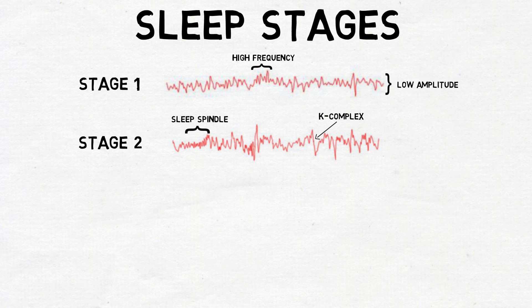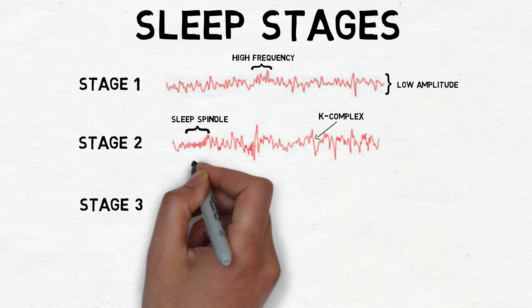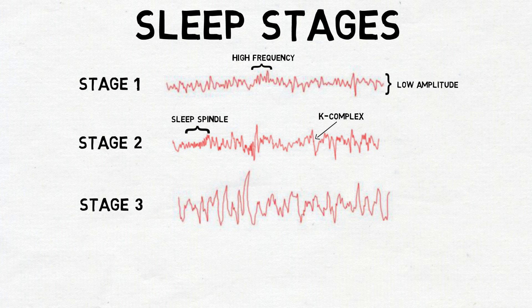Stage 3 sleep is also known as slow-wave sleep, or deep sleep. In stage 3, delta waves, which are low-frequency, high-amplitude waves, make up at least 20% of brain activity. Stage 3 sleep is thought to be especially important to overall restfulness.